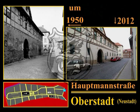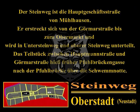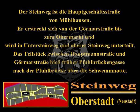Dominiert wird die Straße vom Hauptmannhof in der Nummer 7, wo der Stadthauptmann wohnte; heute ist dort der Sitz der SWG, der früheren KWV. Der Steinweg ist die Hauptgeschäftsstraße von Mühlhausen. Er erstreckt sich von der Görmerstraße bis zum Obermarkt und wird von vielen Mühlhäusern noch in Obersteinweg und Untersteinweg unterteilt. Ursprünglich bestand der Steinweg aus vier Teilstücken: das unterste zwischen Görmerstraße und Hauptmannstraße hieß früher auf der Fuhlbrücke bzw. Fuhlbrückengasse nach der alten Fuhlbrücke über die Schwemmnotte.